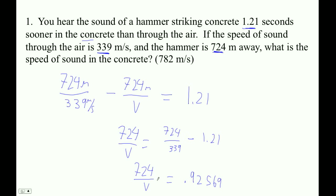So it must be that if we cross-multiply, this is over 1. So this times this is this times this. So that V is going to be this divided by this. So 724 divided by the answer that I just got is 782. Yay! There's our answer.